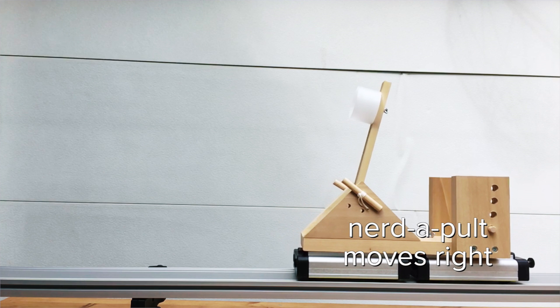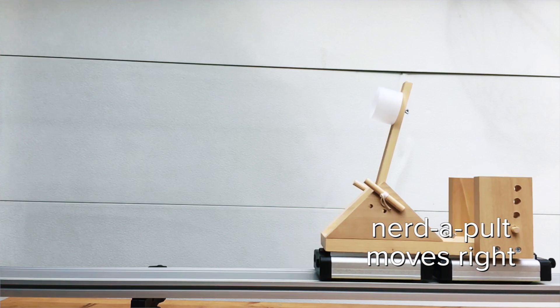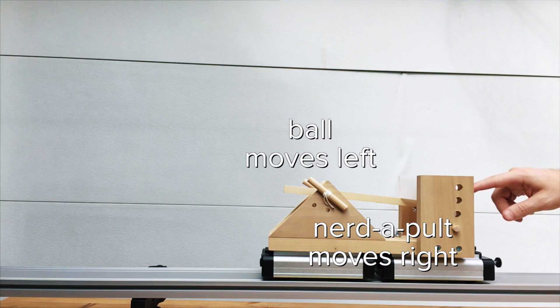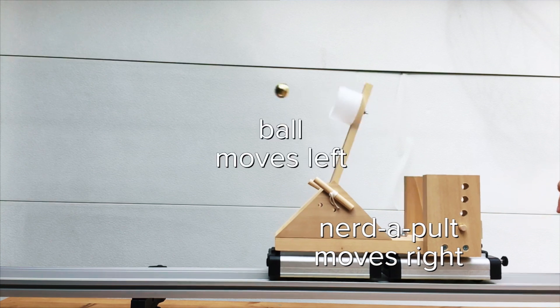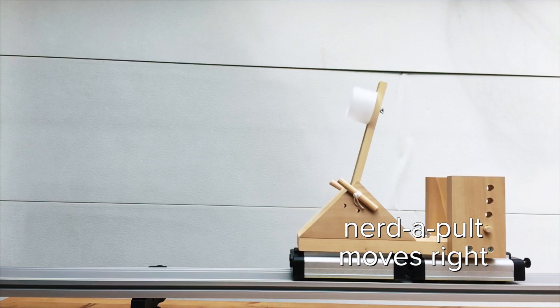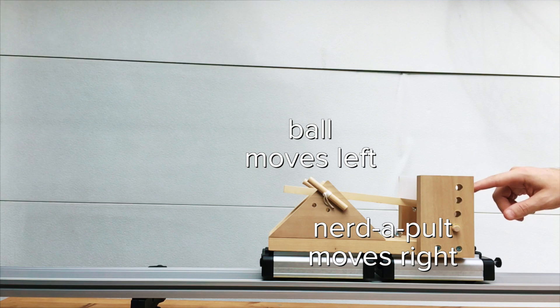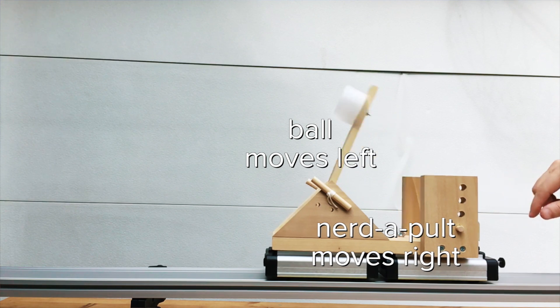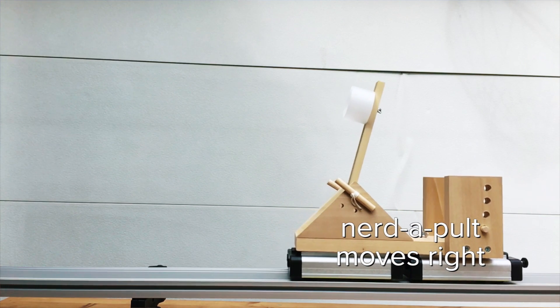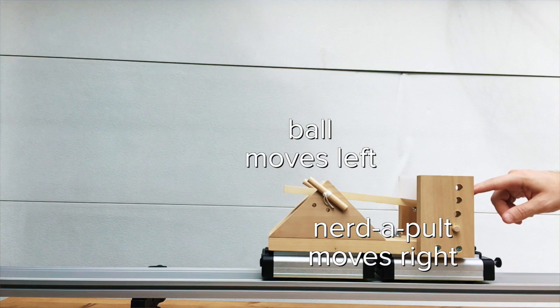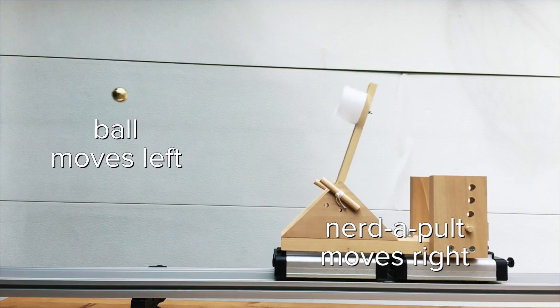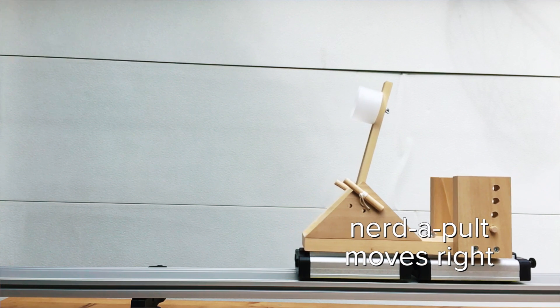Bo, why is that? Why does the Nerdapult move to the right? Because of conservation of momentum. The brass ball has negative momentum, therefore the Nerdapult must have positive momentum. And we know momentum is conserved because this is an explosion and momentum is conserved in all explosions. Absolutely.